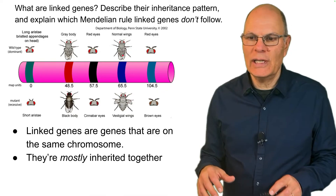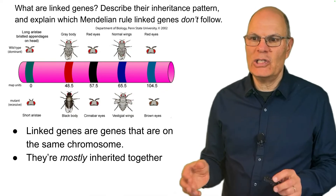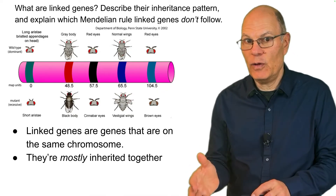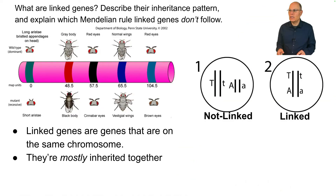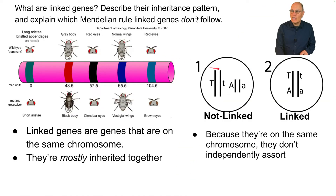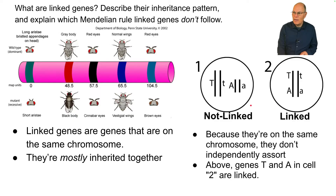These genes are mostly inherited together, which is different from the independent assortment we saw with Mendelian genetics. Because they're on the same chromosome, these genes don't independently assort. For example, genes T and A in one cell are linked; in another cell they're not linked — those would independently assort, and the linked ones wouldn't.